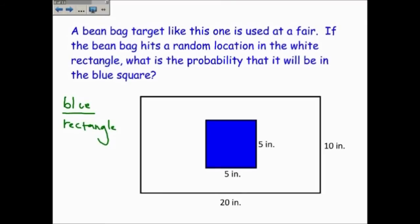Now, the area of the blue square is five times five, or 25 inches squared. The area of the white rectangle is base times height. 20 inches times 10 inches is 200 square inches.